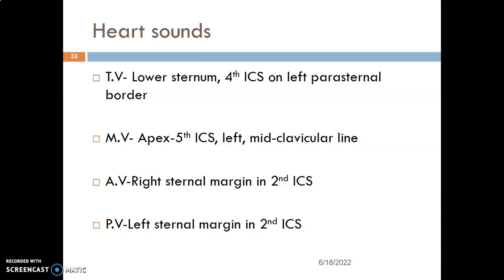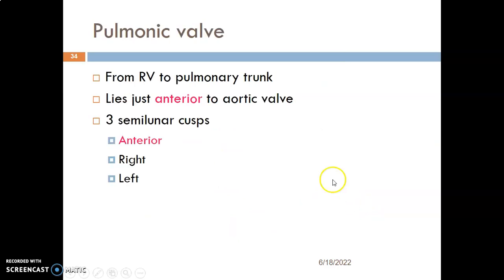While the pulmonary valve — where do you auscultate for it? Still at the second intercostal space like the aortic valve, but this one you put it on the left parasternal border. This is a very important section of clinical practice, so you need to know where to auscultate for the heart sounds.